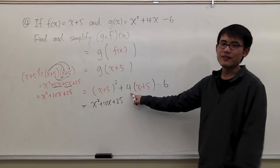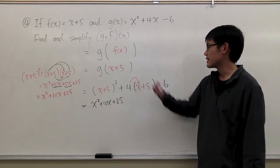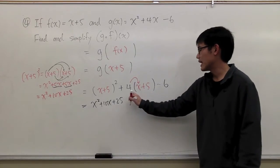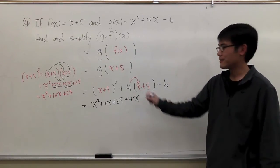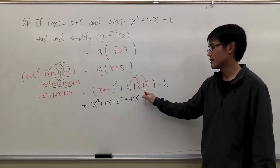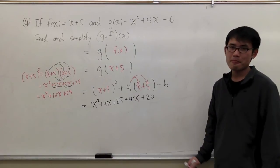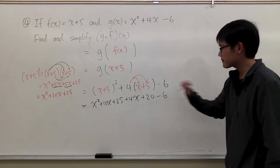And for this one, I have the 4 in front of the parentheses. I just have to multiply the 4 inside. 4 times x, I get plus 4x. And we also have the 4 times the 5, which will be plus 20. And at the end, we have the minus 6.